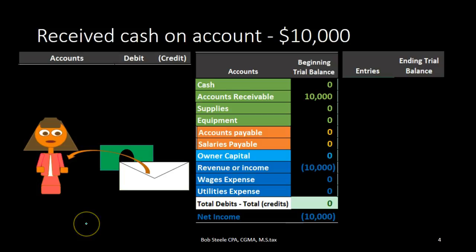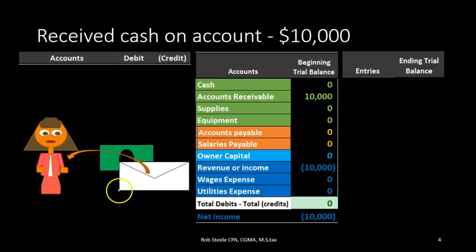Here we have our transaction: receiving cash on account. Here's the owner receiving cash — we're going to assume it came in the mail. In real life it would probably be a check, but the point is that we received the money in the mail for work that was done in the past.